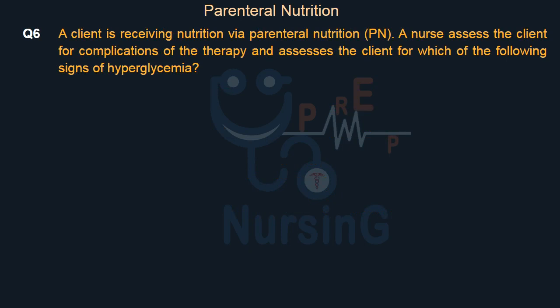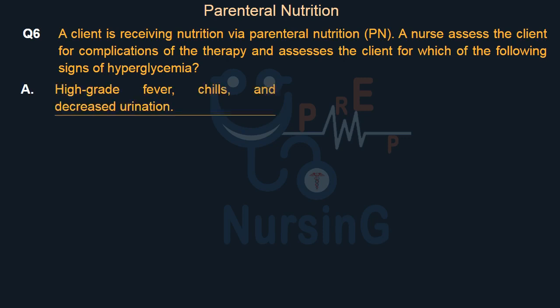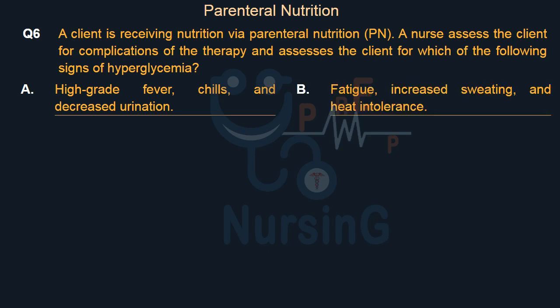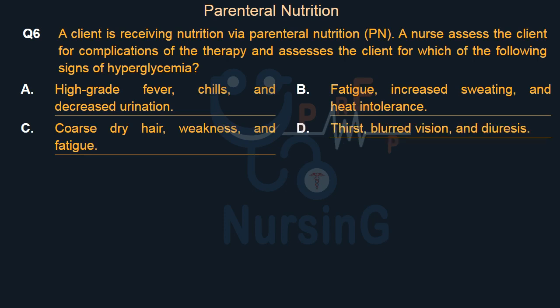A client is receiving nutrition via parenteral nutrition (PN). A nurse assesses the client for complications of the therapy, specifically for which of the following signs of hyperglycemia. Option A: High-grade fever, chills, and decreased urination. Option B: Fatigue, increased sweating, and heat intolerance. Option C: Coarse dry hair, weakness, and fatigue. Option D: Thirst, blurred vision, and diuresis.